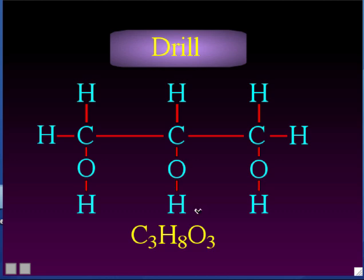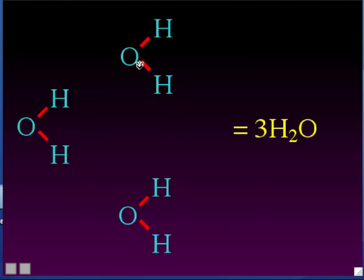Now you know two ways to represent molecules: their molecular structure and their molecular formula. Sometimes when talking about molecules, we might want to talk about more than one of a molecule. For instance, if we want to talk about three water molecules, you just put a big number in front of the molecular formula to say how many of those molecules you're talking about. One water molecule is H₂O, and then you put a big number in front to say how many.